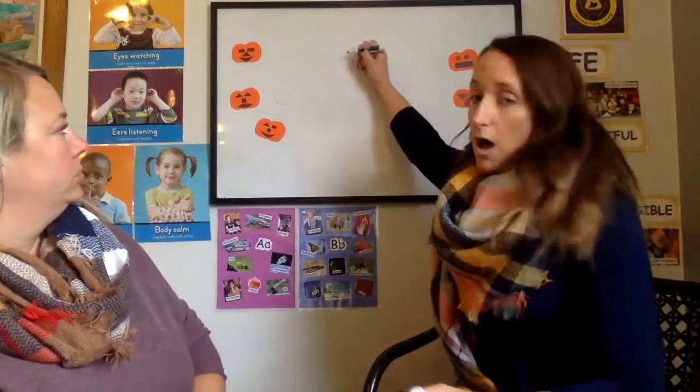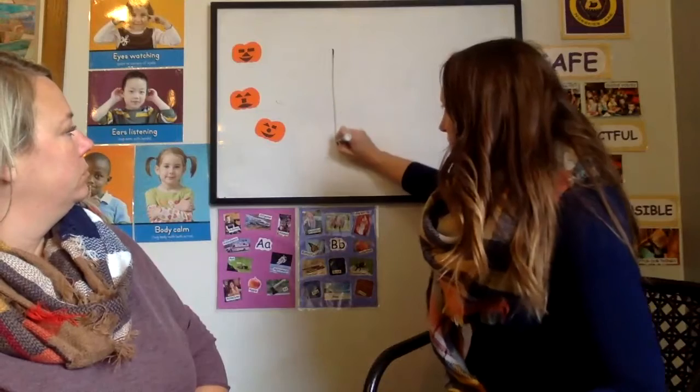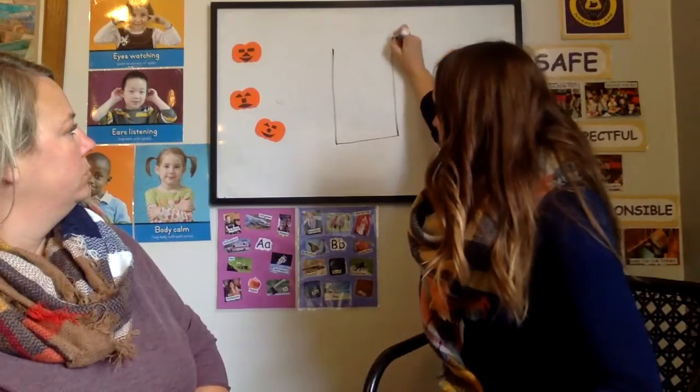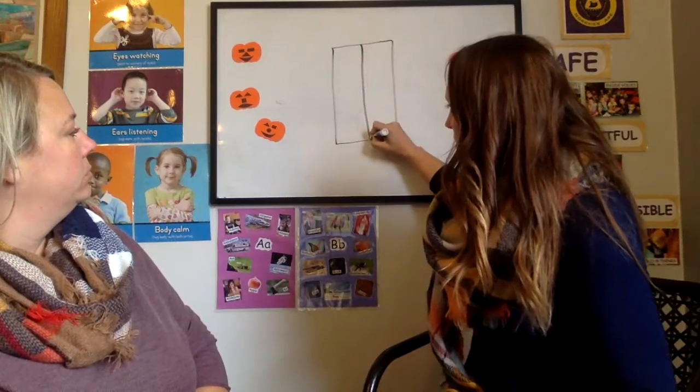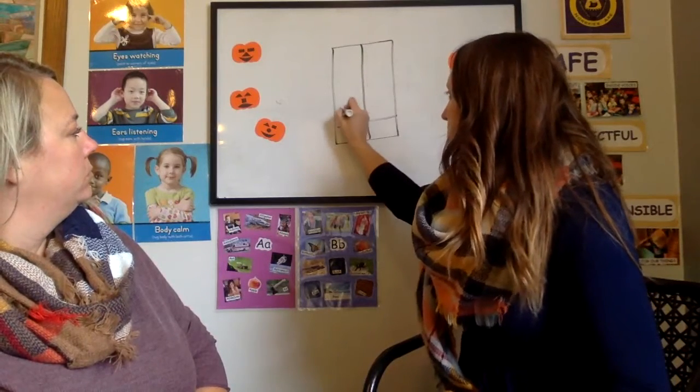So the first thing we need is our graph. So I'm going to draw a graph. We just have a rectangle, and then I have a line down the middle, and some lines going this way. Okay.